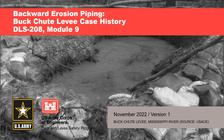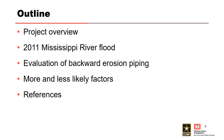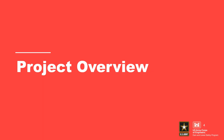This presentation is a case history on backward erosion piping at Buck Chute Levee. We'll begin with an overview of the project, followed by a discussion of the 2011 Mississippi River event that caused widespread flooding. Next, we'll step through a node-by-node evaluation of backward erosion piping at Buck Chute Levee and summarize the factors that made BEP more likely and less likely during the flood event. First, a project overview of Buck Chute Levee.